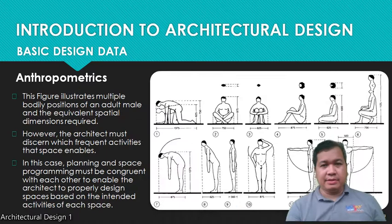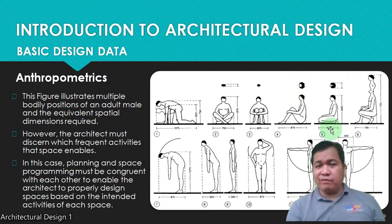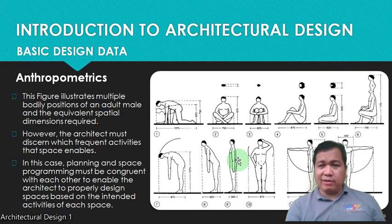This figure illustrates multiple bodily positions of an adult male and equivalent spatial dimensions required. There are dimensions for sitting, squatting, and moving your hands. This is important, for example, when you design your hallways or spaces where a person has to sit or walk.